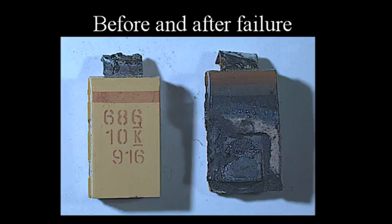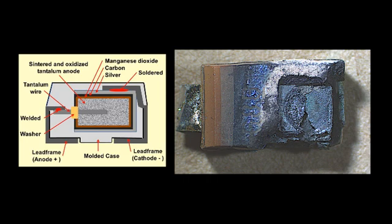This is where the cathode is soldered onto the manganese dioxide side of the capacitor. That junction has literally blown apart.